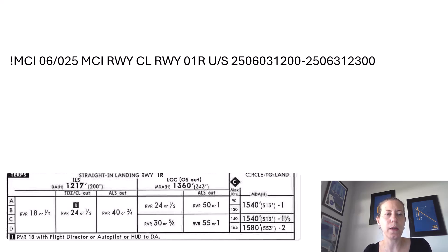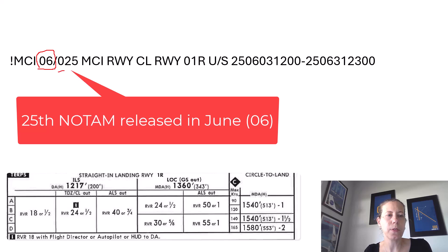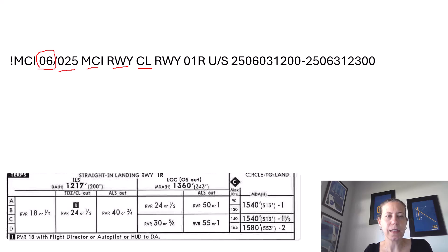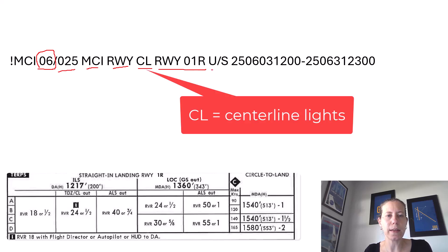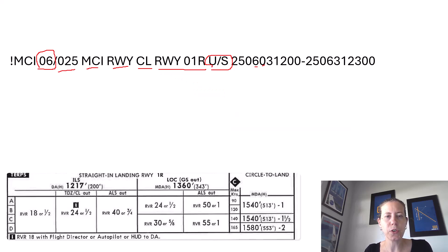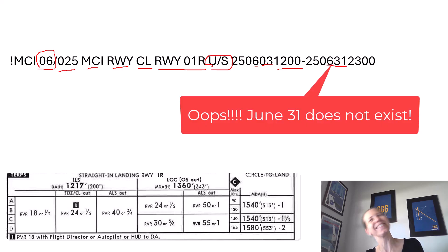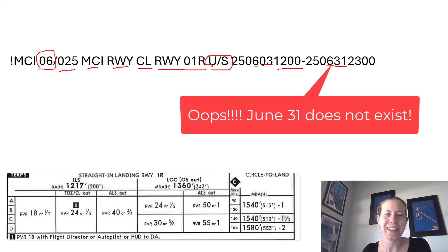So let's talk about this next one — I made a new NOTAM. It's June and it's the 25th NOTAM of the month for Kansas City and is a runway NOTAM. The centerline lights for Runway 1 Right are not working — unserviceable — starting on June 3rd of this year at 1200 UTC and continuing until June 30, 2025 at 2300.